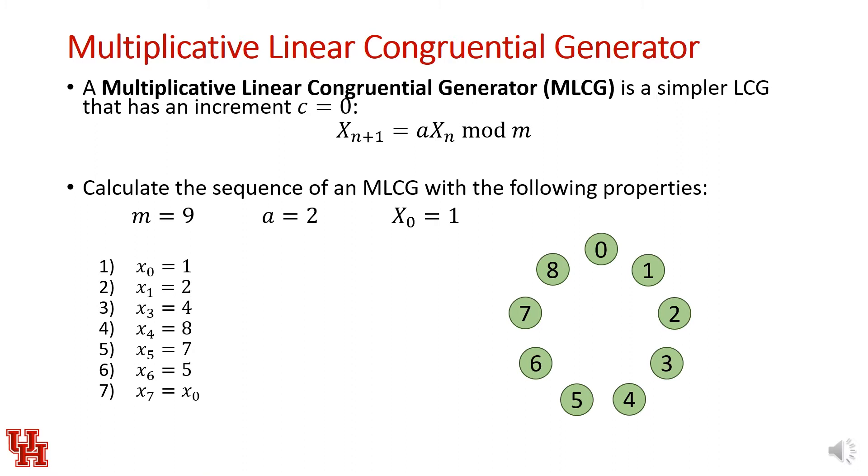Here's what that looks like graphically. This will show you what the modulo operation does. If we start with an initial seed of 1, the increment basically multiplies our value, our original seed, by 2. Then once our value is 2, it multiplies it by 2 again, giving us a value of 4, and then 8.